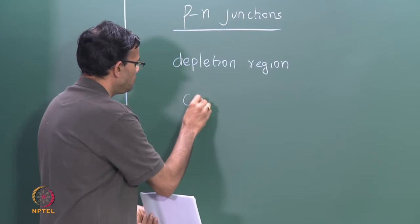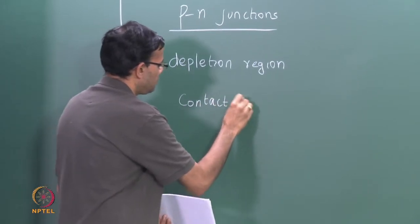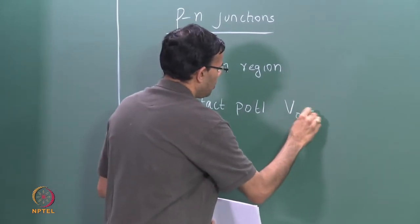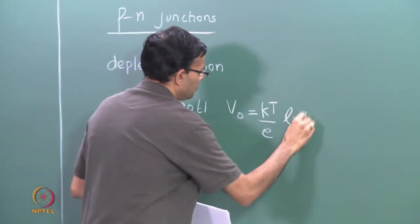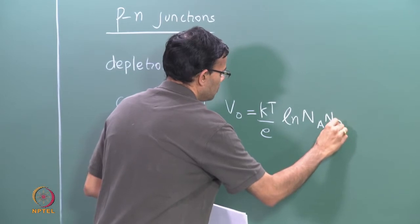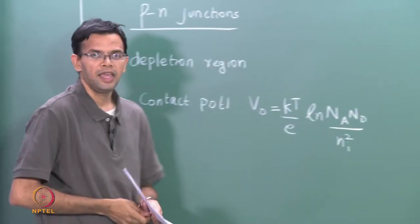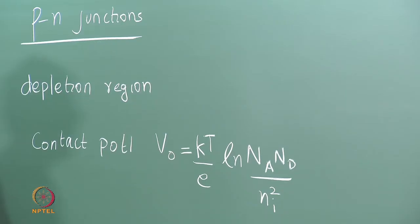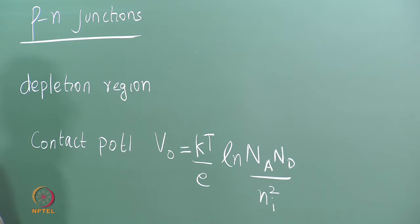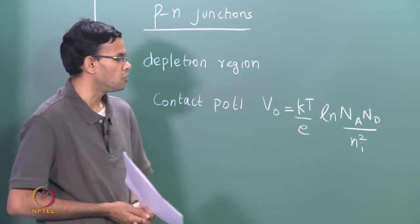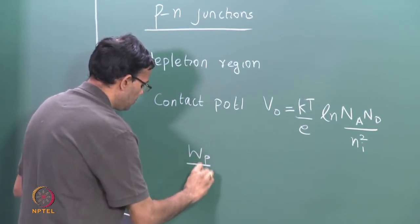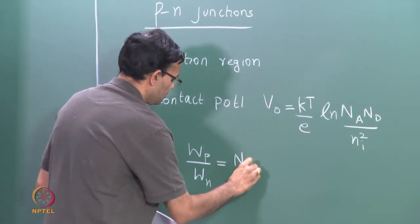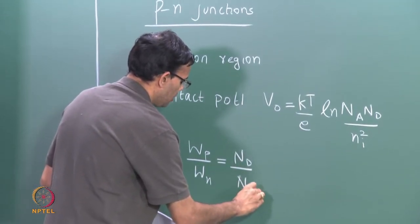We also calculated the value of the contact potential V naught from last class, where n_a and n_d are the concentrations of acceptors and donors on the p and n-side. We also found that the width of the depletion region was inversely proportional to the concentration of your dopants, so that w_p over w_n equals n_d over n_a.